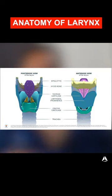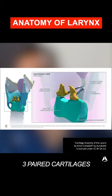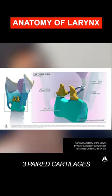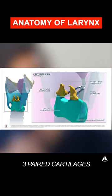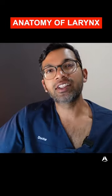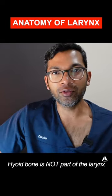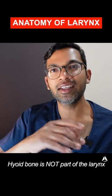The three paired cartilages include the arytenoids, which is a triangular-shaped cartilage forming the lower part below the aryepiglottic ligaments, and there's also the cuneiform and the corniculate cartilage. The hyoid bone is a floating structure nearby but is not part of the larynx itself.